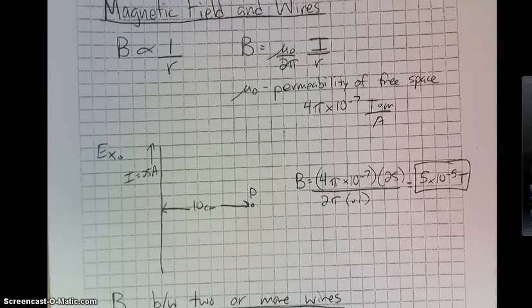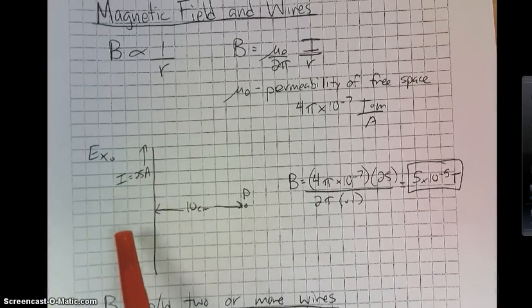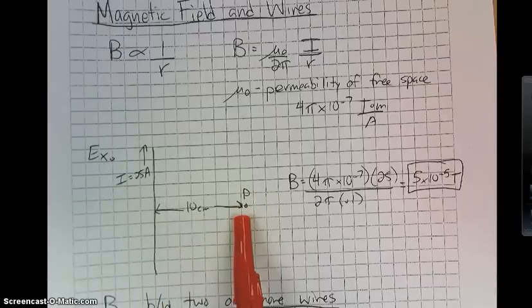Well, if we had a wire running 25 amps, and we wanted to find what kind of magnetic field it produces at a point that is 10 centimeters away?